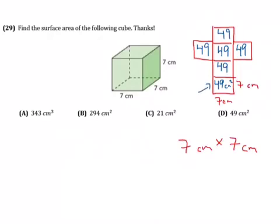So each face would require 49 centimeters squared. So you just add up all those 49s, or you can do 49 centimeters squared times six, because there are six faces, and that will give you your answer.